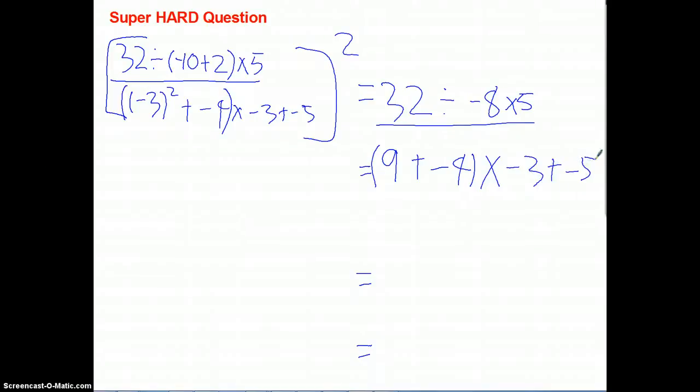Now, we need to solve 9 plus negative 4. So, for the top corner here, we have to divide 32 divided by negative 8 times 5. So, 32 divided by 8 is negative 4. So, negative 4 times 5.